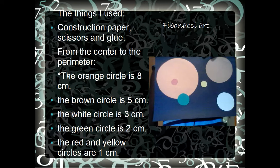And for all of them, so for the sun sets of the perimeter, the orange circle is 8 centimeters, the brown circle over here is 5 centimeters, the white circle is 3 centimeters, the green circle is 2 centimeters, and the red and yellow circles right here are 1 centimeter.